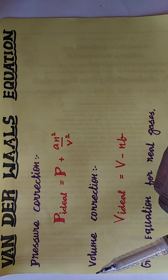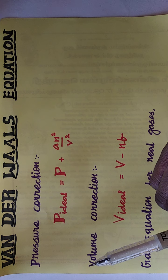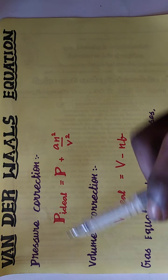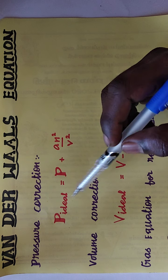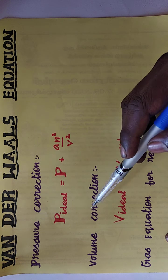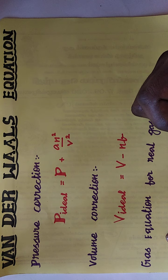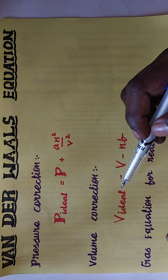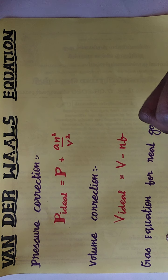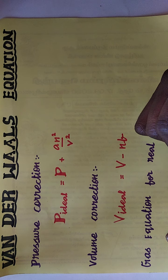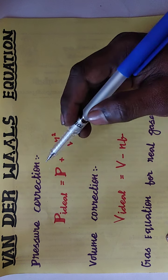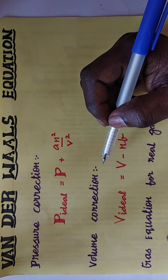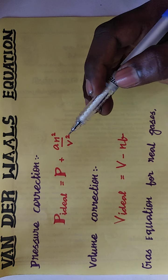Based on the assumptions given by the kinetic theory of gases, Van der Waals made two corrections — one in the pressure term and one in the volume term. By combining these two corrections, he gave an equation to explain the real behavior of gases.